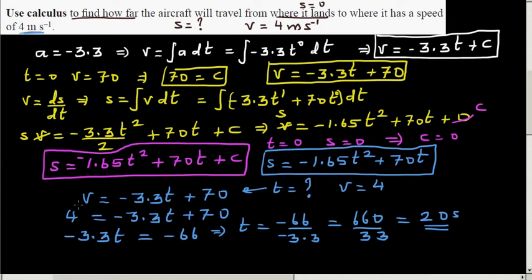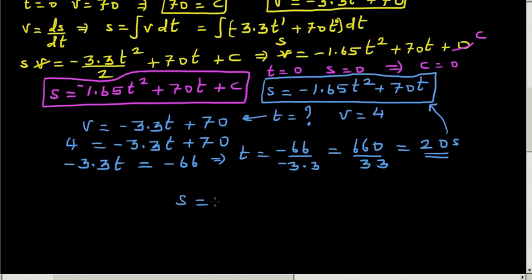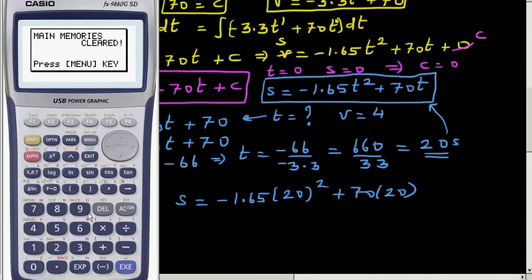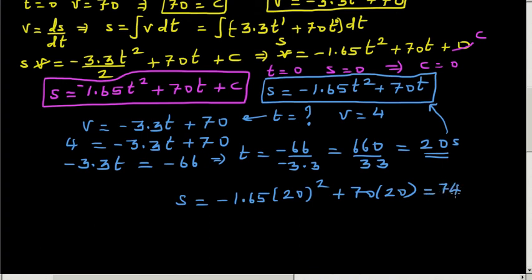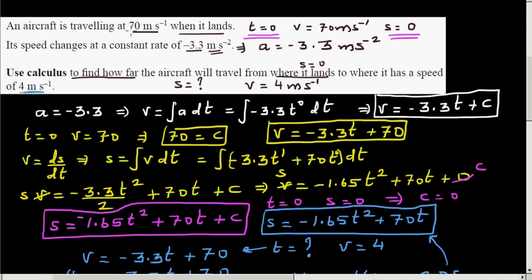Now we substitute t = 20 into the displacement equation: s = -1.65 × 20² + 70 × 20. Using a calculator: -1.65 × 400 + 1400 = -660 + 1400 = 740 meters. So the aircraft covered 740 meters after 20 seconds when the velocity was 4 meters per second.